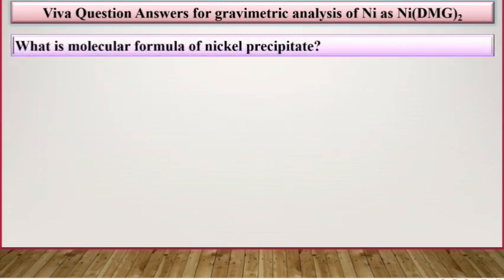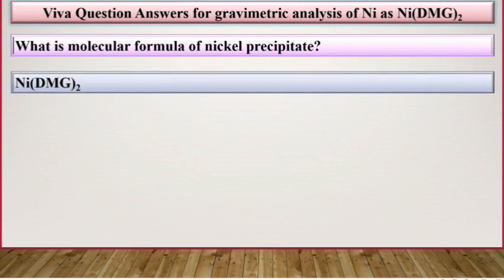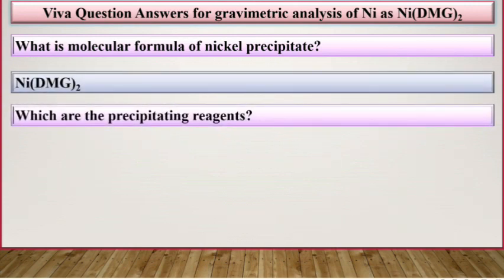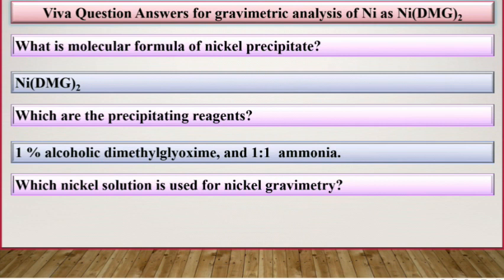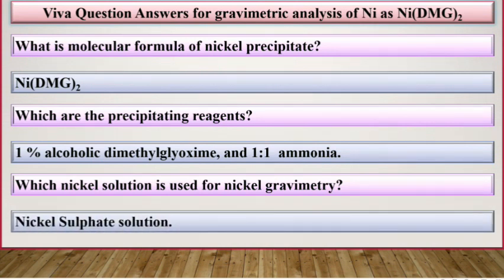What is the molecular formula of the nickel precipitate? It is Ni(DMG)₂. Which are the precipitating reagents? The precipitating reagents are 1% alcoholic dimethylglyoxime and 1:1 ammonia. Which nickel solution is used for nickel gravimetry? Nickel sulfate solution is used for nickel gravimetry.